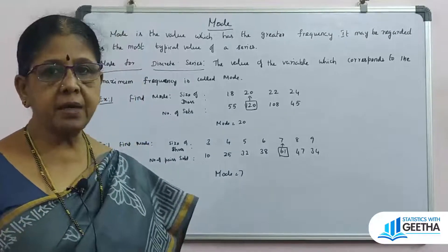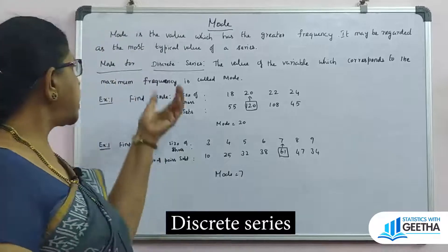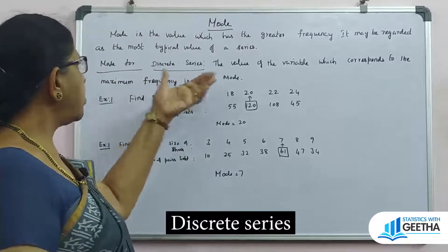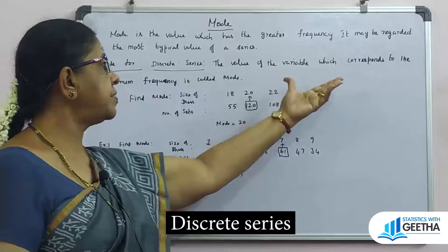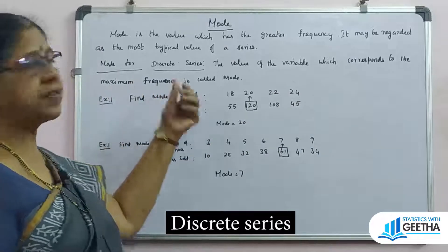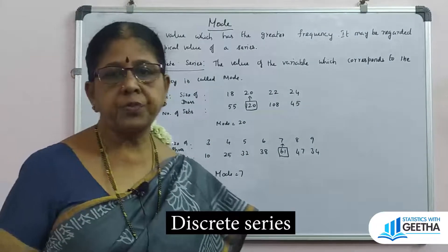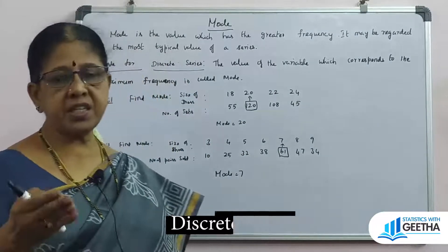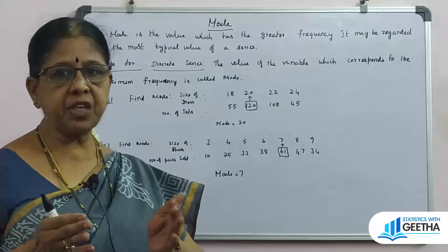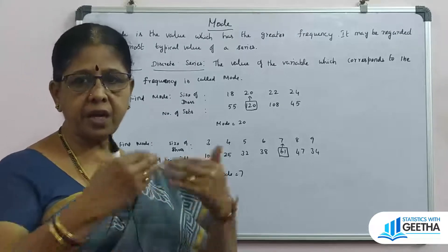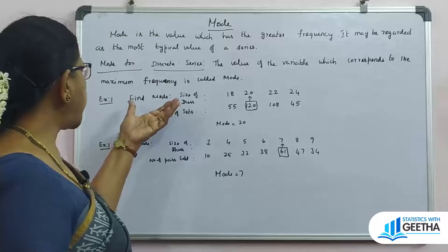Now we will see the mode in the discrete series. In a discrete series, the value of the variable which corresponds to the maximum frequency is the mode. So in a discrete series with x and f columns, the variable value corresponding to the highest frequency is the mode. Let's look at examples.